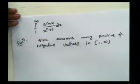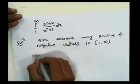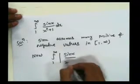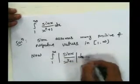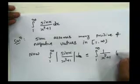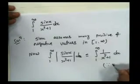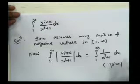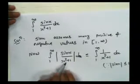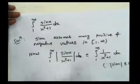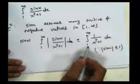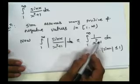We take the absolute integral: integration from 1 to infinity of modulus of sin(x) upon x squared plus 1 dx, which is less than or equal to integration from 1 to infinity of 1 upon x squared plus 1 dx, because the modulus of sin(x) is always less than or equal to 1. By the direct comparison test, we test the convergence of the integral from 1 to infinity of 1 upon x squared plus 1 dx.